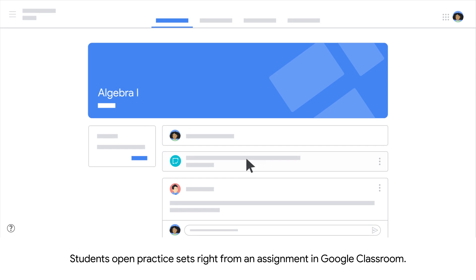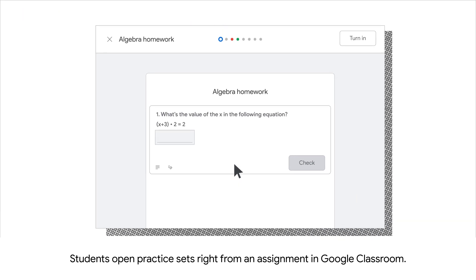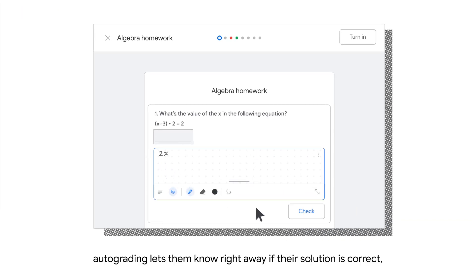Students open practice sets right from an assignment in Google Classroom. As they work, auto-grading lets them know right away if their solution is correct, which helps build confidence, keeps them engaged, and prevents one misunderstanding from impacting the entire set.